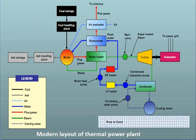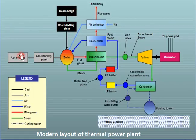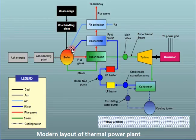You can see this is the layout of the modern thermal power plant. You can see here the 4 circuits: the first one is the coal and ash circuit, the second one is the air and flue gas circuit, the third one is the steam and water circuit, and the fourth one is the circulating water circuit. This is the main 4 circuits in the thermal power plant, and here we can study how the thermal power plant works.